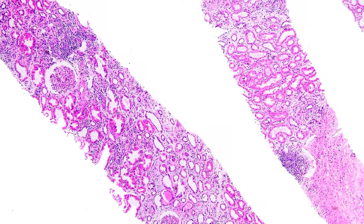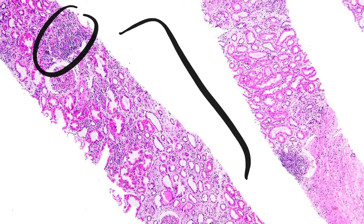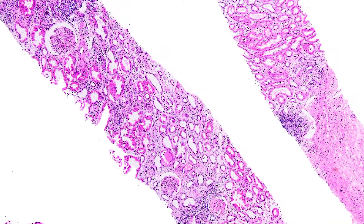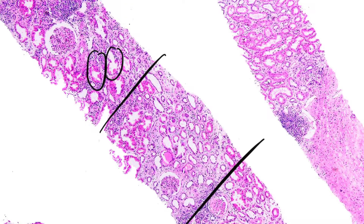As we look here at this low-power image, we can already see we have lots of blue throughout this piece of cortex, consistent with interstitial inflammation. Additionally, we have significant tubular injury that we can see as well, characterized by epithelial simplification in areas of ectasia. In the biopsy specifically through this area, we also see significant interstitial edema, all from this low-power view.